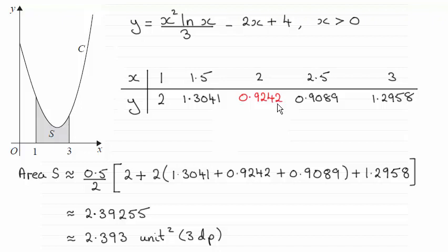And then we had to use the trapezium rule with these strips that we get from the table to work out an estimate for the area S. And you can see it turns out to be 2.393 to 3 decimal places.